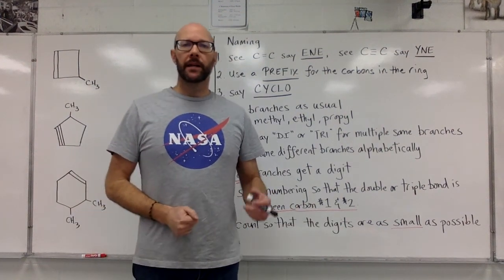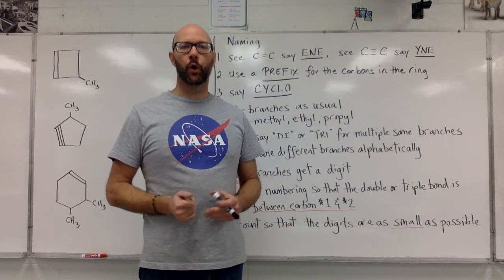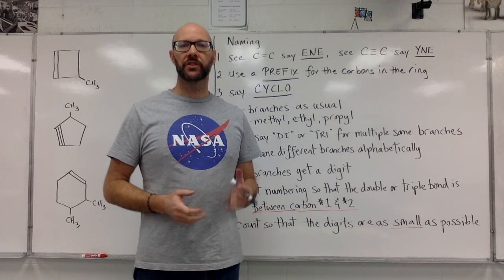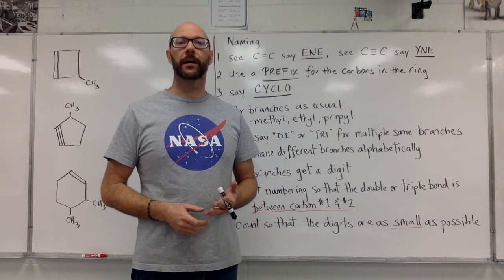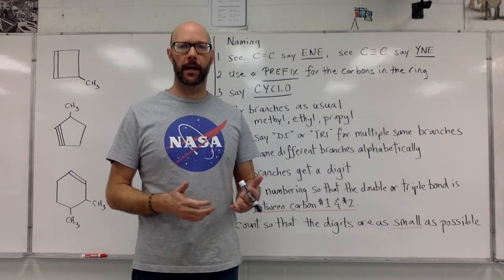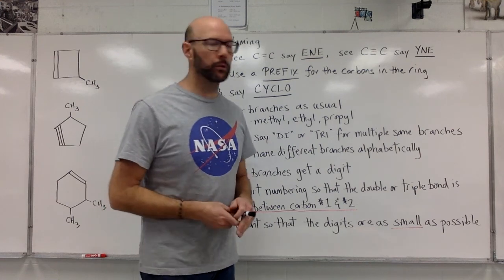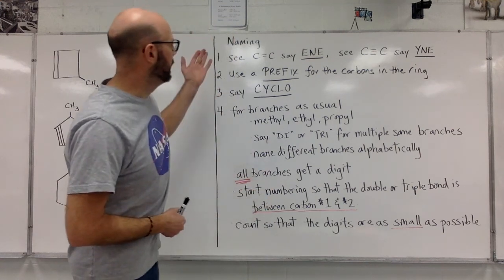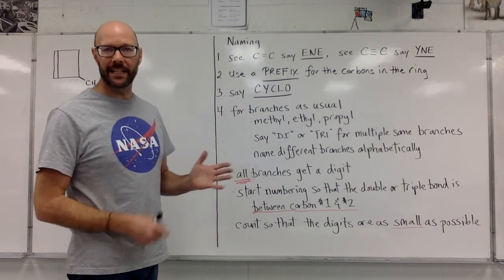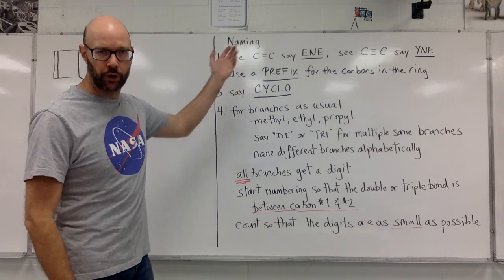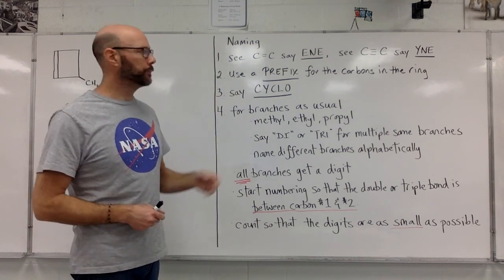Hi everyone. This is a video on a few examples for naming cycloalkenes and cycloalkynes. Quick review of the naming rules: if we see a double bond, the name is going to end with 'ene.' If we see a triple bond, it's going to end with 'yne.'